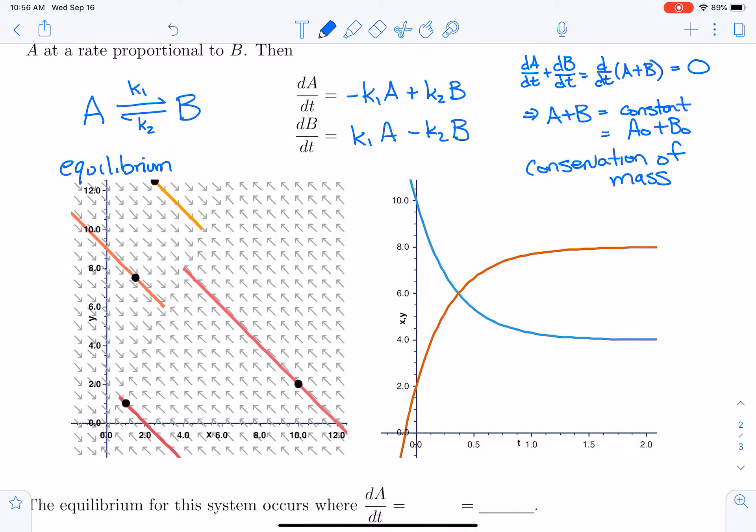Equilibrium when, let's say, B is equal to k1 over k2 times A. If along that line—so in fact you can see the phase plane here—we have kind of a line of equilibrium points.